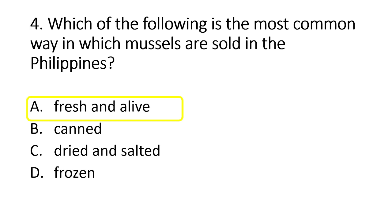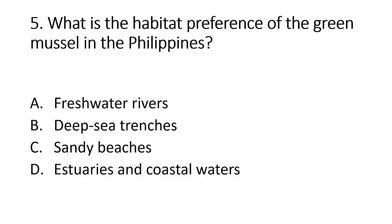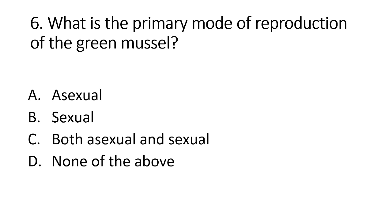They are typically kept alive in shallow tanks of seawater until they are purchased by customers. Number 5. What is the habitat preference of the green mussel in the Philippines? A. Freshwater rivers. B. Deep sea trenches. C. Sandy beaches. D. Estuaries and coastal waters. The answer is letter D, mussels prefer the estuaries and coastal areas. Number 6. What is the primary mode of reproduction of the green mussel? A. Asexual. B. Sexual. C. Both asexual and sexual. D. None of the above. The answer is letter B, this means that mussels reproduce sexually.